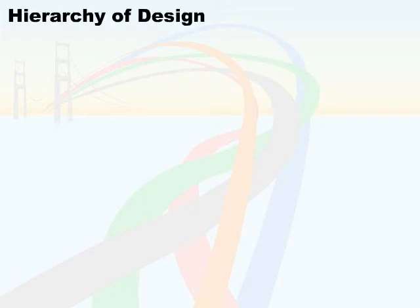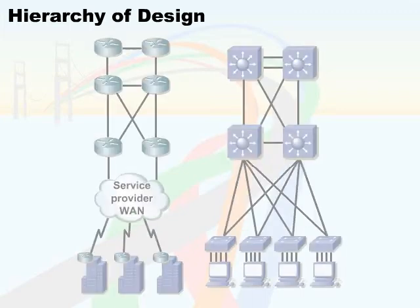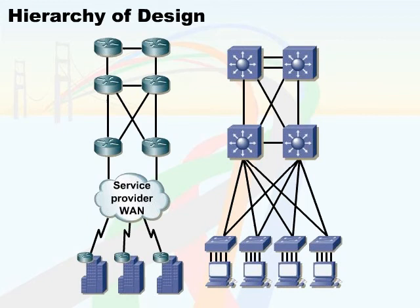Speaking of network design, there is always a hierarchy of connectivity which should be used when implementing network designs. Cisco has provided a three-layer model that we can use to justify a design and make sure we're following proper procedure. As you move throughout your professional career, you'll notice this model is expounded upon into what is called the Enterprise Composite Model. But to simplify it at this level, we are looking at three separate layers.